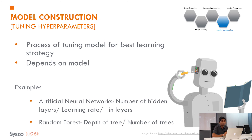Then we do hyperparameter tuning. Once we have a model, we need to tune its parameters. For example, in a random forest model, the number of trees is a parameter — we need to identify the correct number of trees that will give better results. For a particular model, there may be a combination of parameters that gives the best results. Using hyperparameter tuning, we try to identify that combination of parameters to get better results for our machine learning problem.